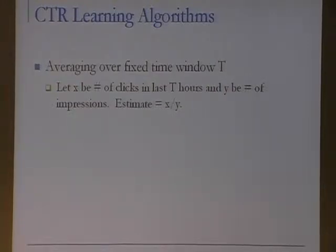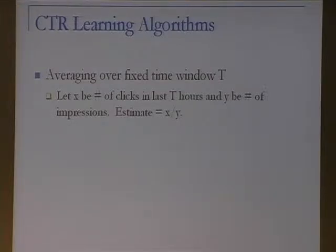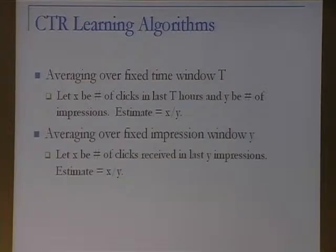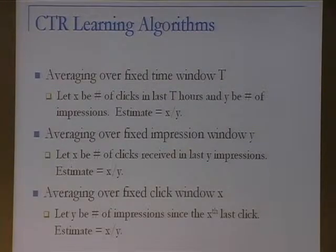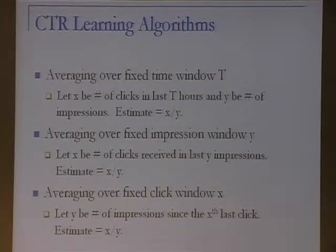To explain this, let me define a CTR learning algorithm. There are many ways to estimate click probability: you could look at the last 100 hours and take the ratio of clicks to impressions; look at the last 100 impressions and divide clicks by 100; or look at the last 100 clicks and compute 100 divided by the number of impressions it took. These are three examples — you can come up with many more.